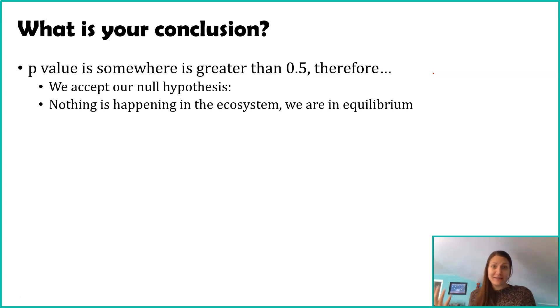In this case, nothing is happening. This population is in equilibrium. None of those assumptions are broken. So natural selection is not happening. Random mating must be happening. This must be a sufficiently large population. There must be no gene flow. So all of those assumptions that we say a population is for being in equilibrium, none of them are broken. So we actually know a lot about this population based on the fact that we accept our null hypothesis.